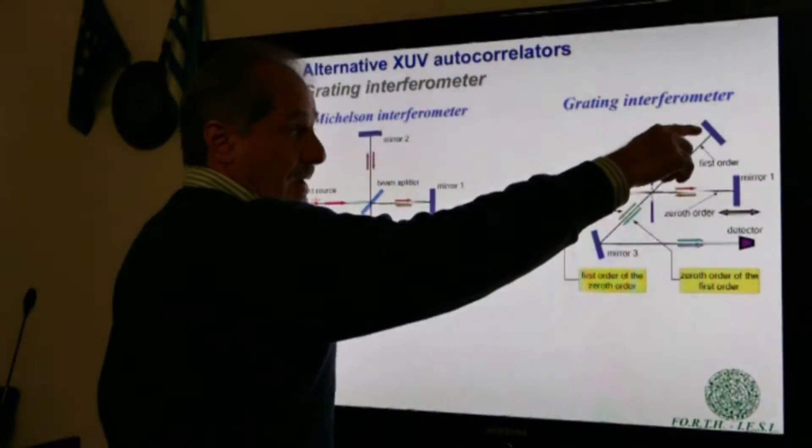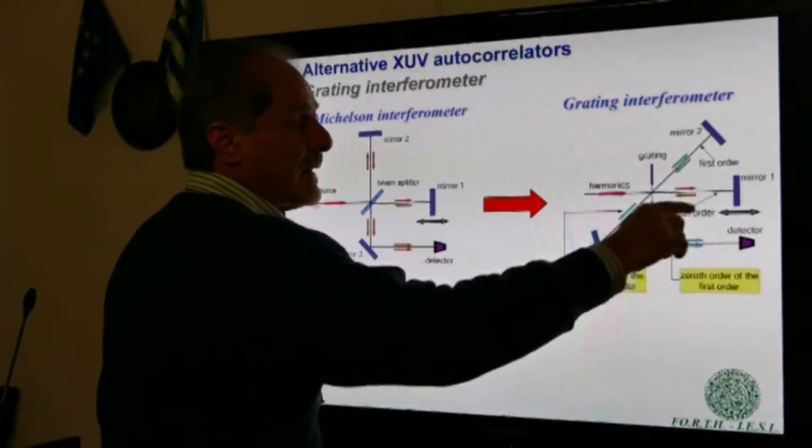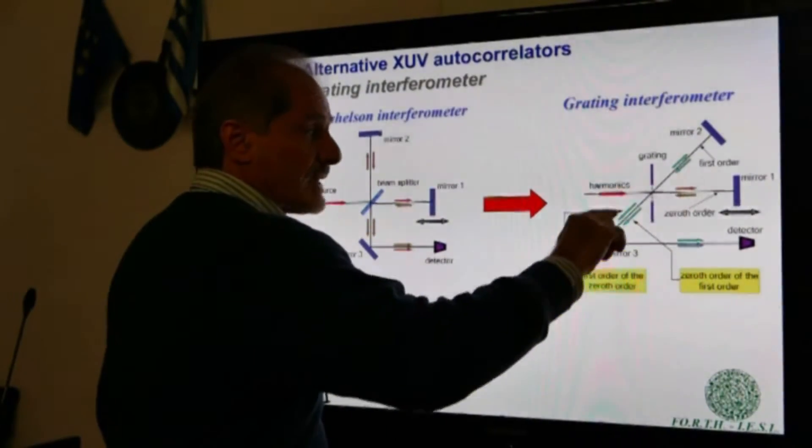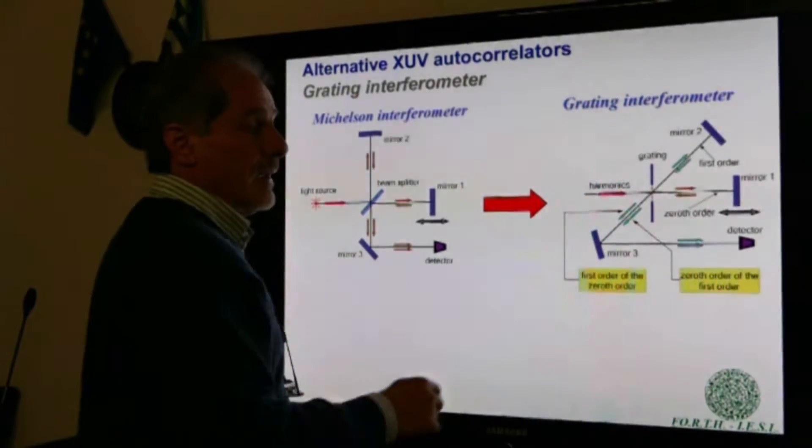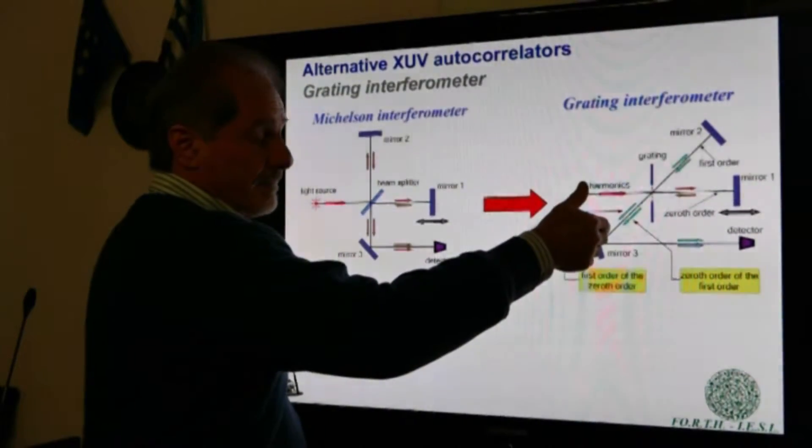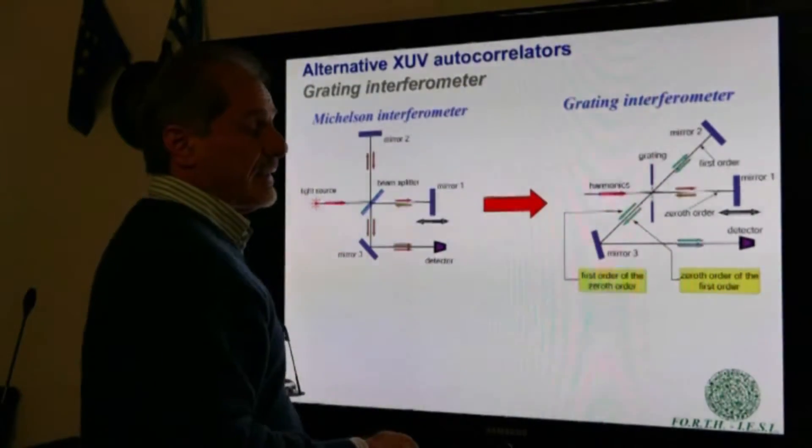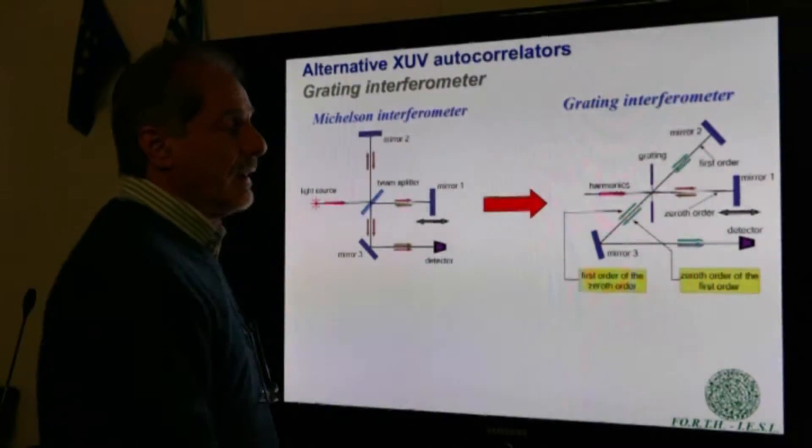The zero-order of the first-order diffracted harmonic beam is recombined exactly with the first-order diffraction of the zero-order diffracted harmonic beam. So the thus recombined beams can be detected by the detector using a third mirror.